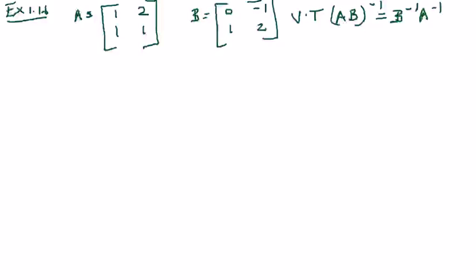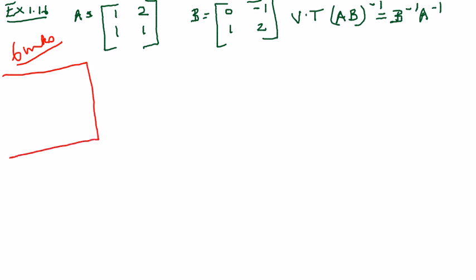Example 1.16 is typically a 6-mark sum. They've given you 2×2 matrices and you have to verify that (AB)⁻¹ is equal to B⁻¹A⁻¹. To find the inverse, we have a formula: it is 1 by mod A into adjoint of A.